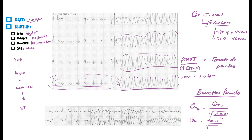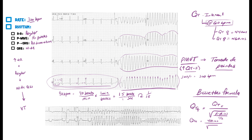The rate here is about three and a quarter boxes, so approximately 90 beats per minute. To convert: 90 beats per minute divided by 60 seconds equals 1.5 beats per second. Flipping that gives us 1 divided by 1.5, which equals 0.66 repeated seconds per beat. That is our R-to-R interval in seconds.